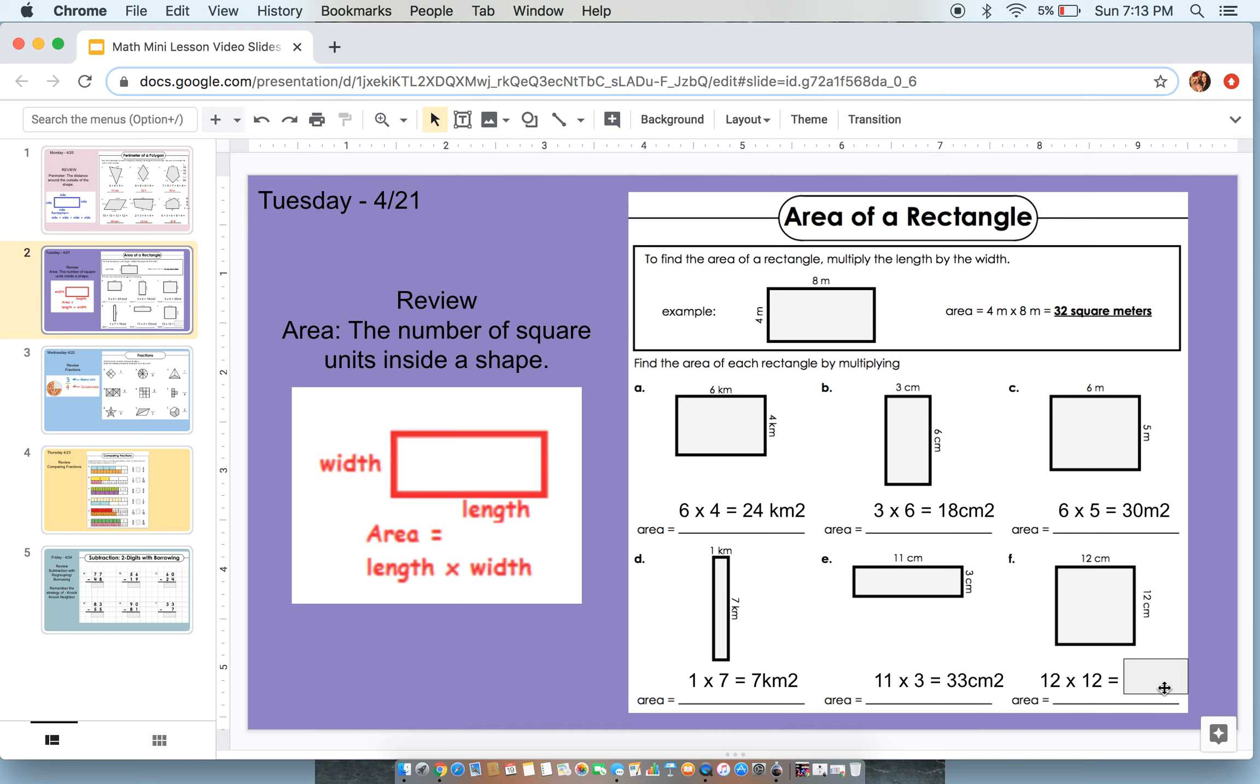All right. And last but not least, this is equilateral. So all of the sides are equal to 12. This is a square. So 12 multiplied by 12 is equal to 24 centimeters squared.